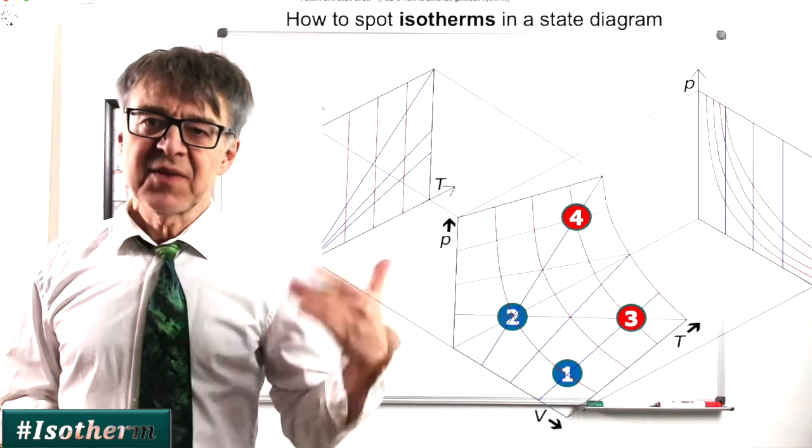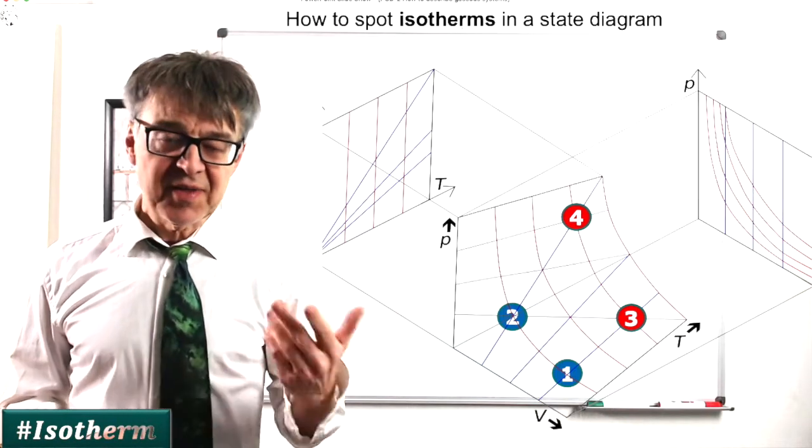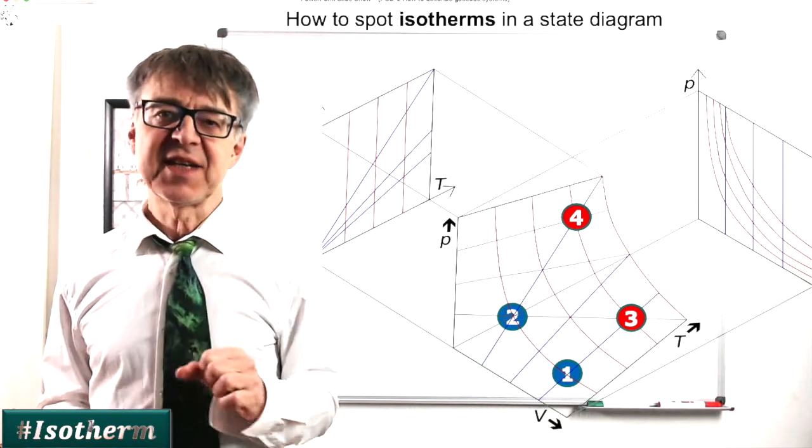The points, the states 3 and 4 also lie on a hyperbola, another hyperbola. These states correspond to isothermal compression at a higher temperature.